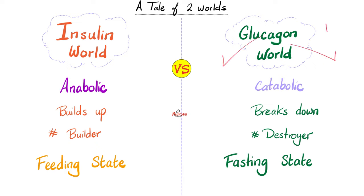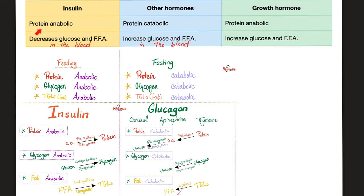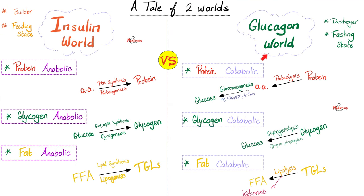The vast majority of hormones are in the glucagon world — which means they are catabolic; they break down stuff to give energy, and you need them in your fasting state. Insulin alone is on the other side. Since thyroid hormone is in the glucagon world, thyroid hormone is protein catabolic — it breaks down protein into amino acids; glycogen catabolic — it breaks down glycogen into glucose; and lipid catabolic — it breaks down triglycerides into free fatty acids.